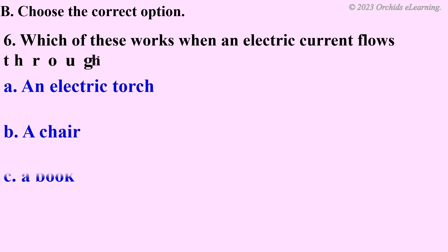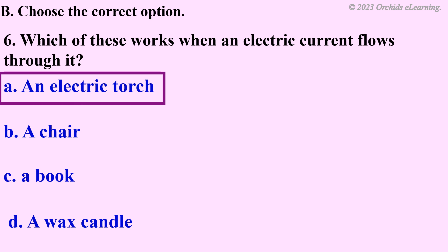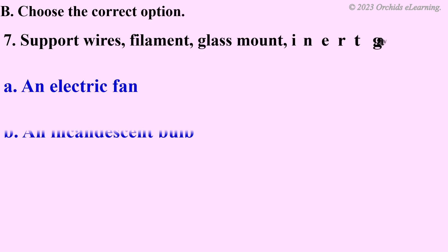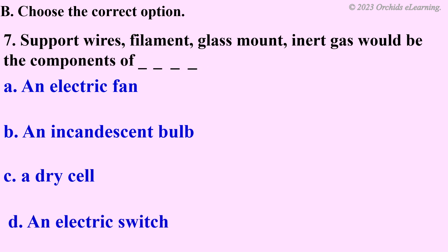Which of these is a good conductor of electric current? Which of these works when an electric current flows through it? An electric torch. Support wires, filament, glass mount, and inert gas would be the components of an incandescent bulb.